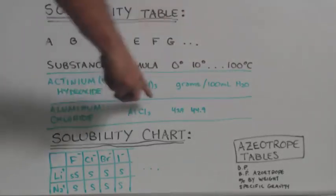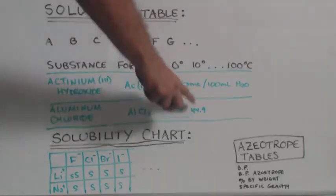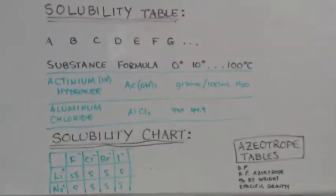And then it'll give you grams per 100 milliliters of water solubility. I didn't do it for the first one, but the second one, look, this would be 0 degrees, this would be 10 degrees, and then it will go on and on.